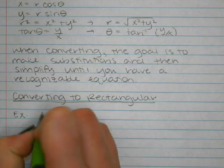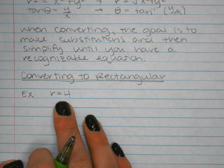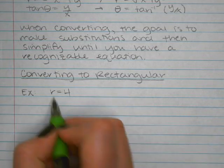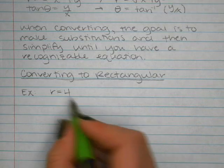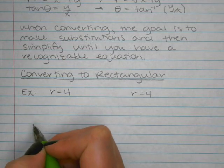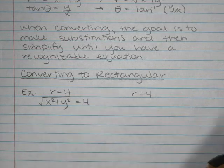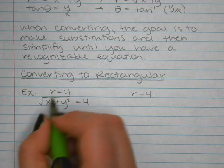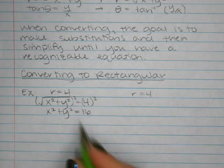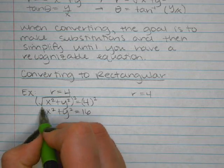For example, if we have R = 4, we know that on the polar graph paper, tracing a radius of 4 all the way around gives us a circle with a radius of 4. Starting off by making a substitution: replace R with √(x² + y²), giving √(x² + y²) = 4. Then square each side to get a recognizable equation: x² + y² = 16, which is a circle centered at (0, 0) with a radius of 4.